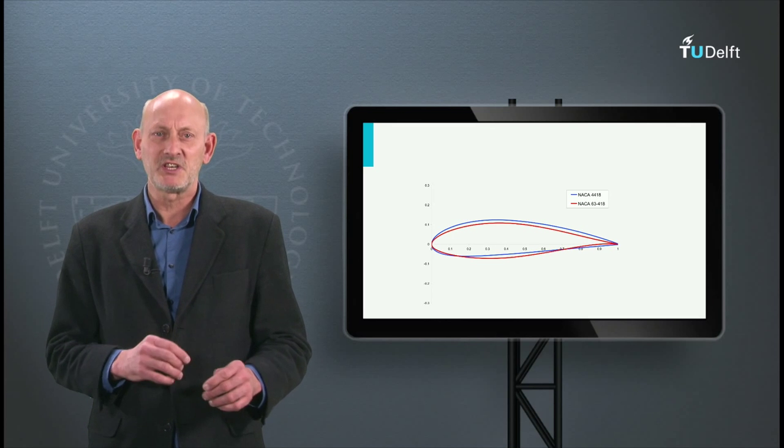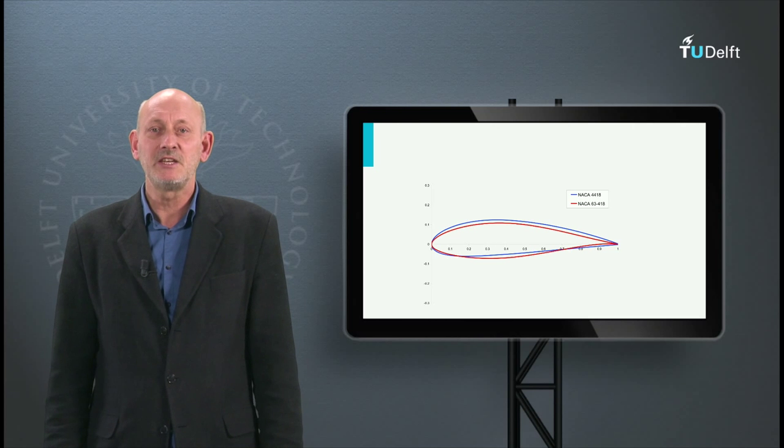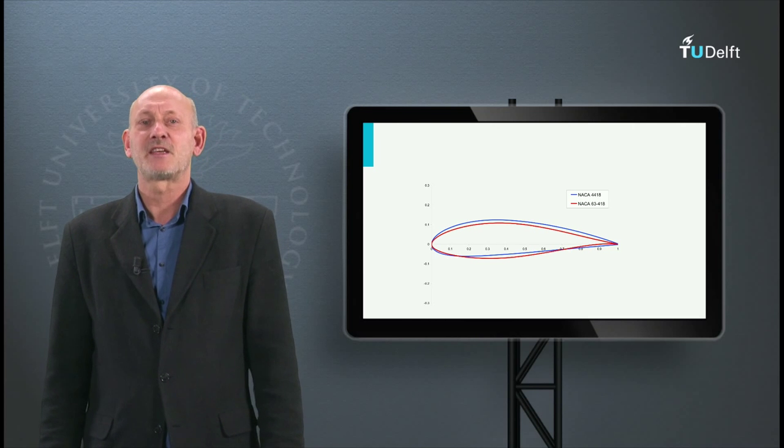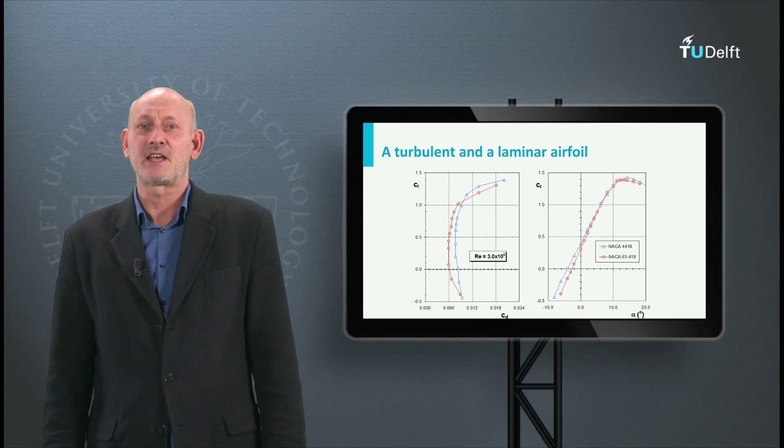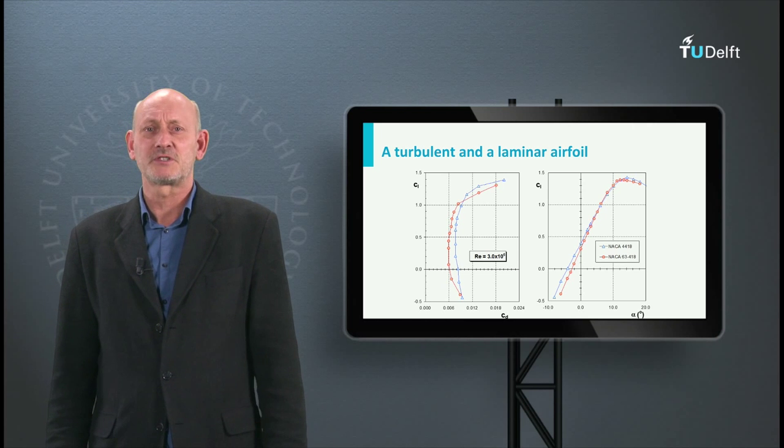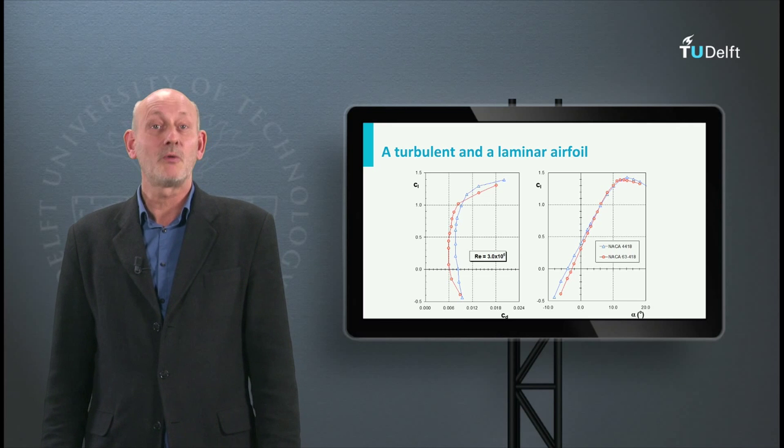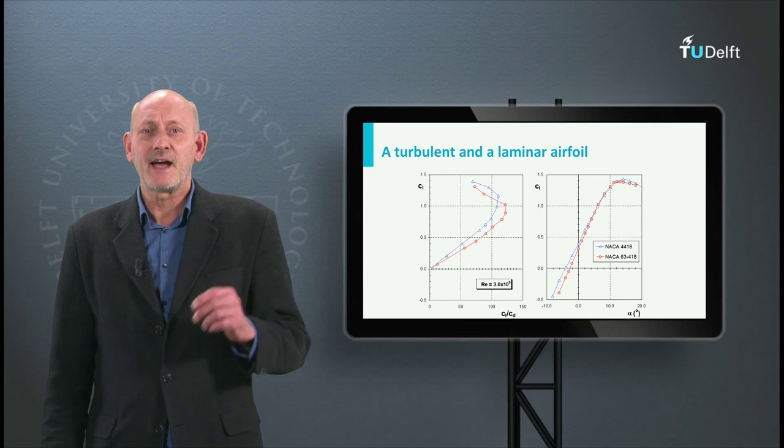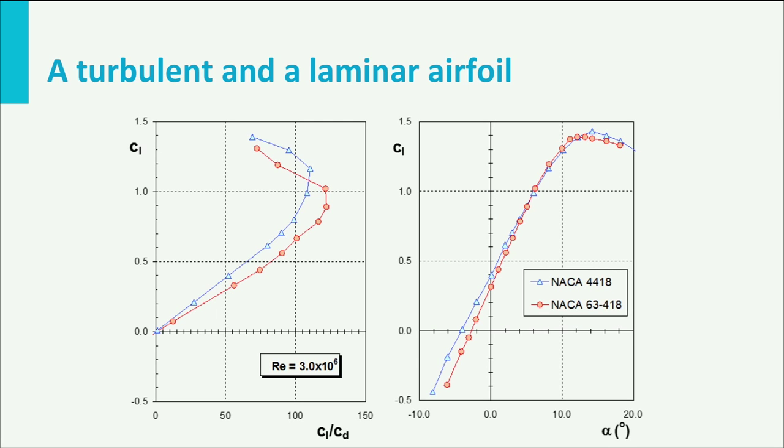The difference in shape between a 4-digit and a 6-digit airfoil is shown here. Both are 18% thick. The 4-digit airfoil has a thicker upper surface. For clarity, one of the digits in the 6 series has been omitted. The upper part of the lift curve is the same for both airfoils, but the 63 series airfoil has a lower drag and also a better lift-drag ratio. This slide here shows the lift as a function of the lift-drag ratio. If we compare the maximum lift-drag ratios of both airfoils, we can see that the difference is 10%.